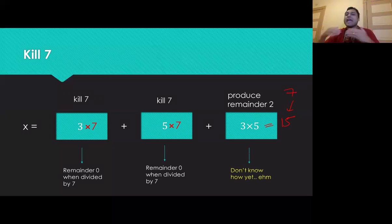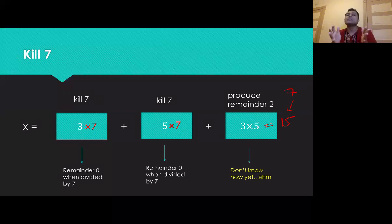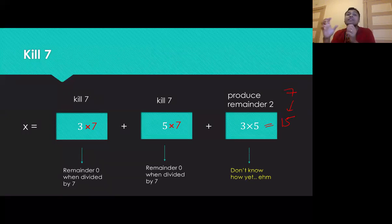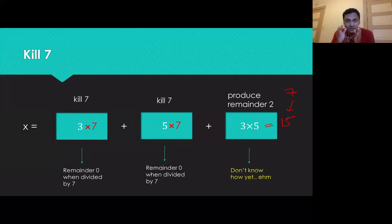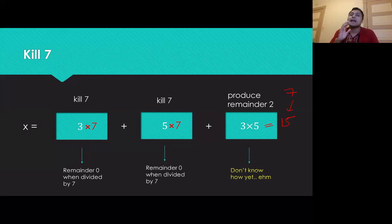We are now halfway through the problem. The next step will use something called inversions in the arithmetic of remainders, and then we will multiply by the necessary remainders to finish the construction of X. Try the problem from this point and we will come back in the next video to finish it up — that will complete our construction for the Chinese remainder theorem.